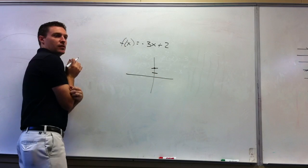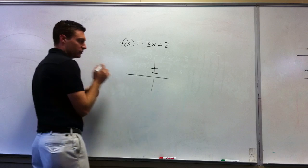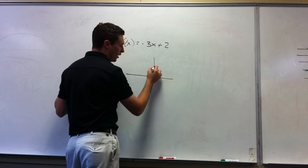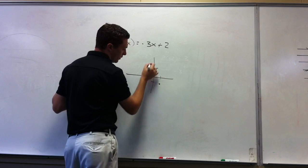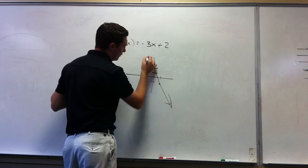My slope is negative 3x. Make it a fraction. So I need to go down 3 over 1. So I go down 3 from here: 1, 2, 3 over 1. And I draw my line through there.